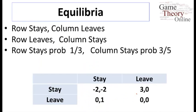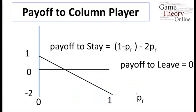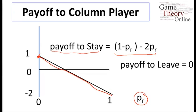We can do the same analysis for the column player. Looking at the column player's payoff as a function of what the row player is doing: if pr is 0, the payoff to stay becomes 1. As pr increases, it slopes downward and eventually hits minus 2 if pr equals 1. The payoff to leave is flat at zero.